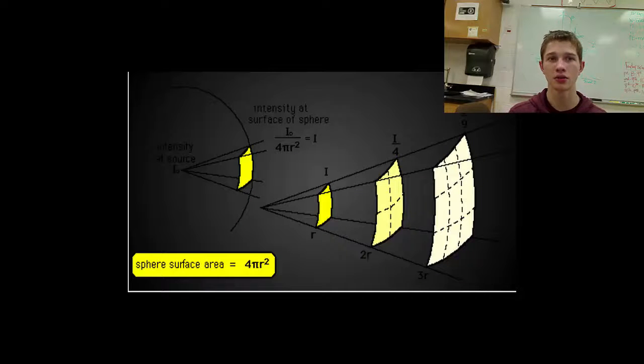This is similar to using the brightness of car headlights at night to estimate how far away it is. For example, if one car's headlights appear four times as bright as those of an identical car, the first car must be half the distance to the second due to the inverse square rule. Type 1a supernovae are the cosmic equivalent of cars with the same wattage of headlights.